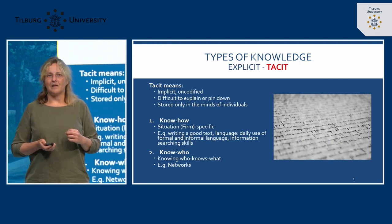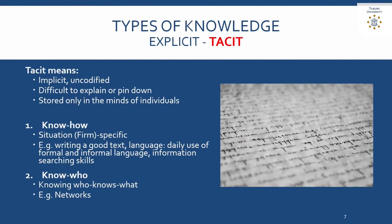Tacit means implicit knowledge — uncodified, not written down. For example, for being a pilot, it might be a good idea to introduce yourself to your co-pilot before you start doing things, to check a little bit what they know, or to recognize that in a certain plane the buttons are in a slightly different position. This is all the trial-and-error knowledge you learn through practicing, by observing others, by seeing what works best, rather than knowing the facts. This knowledge is often so implicit that you don't even realize it is knowledge.